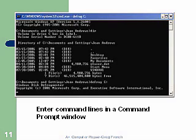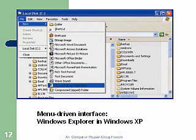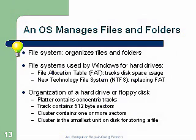There is a menu-driven interface using Windows Explorer in Windows XP. Explorer provides many different menus and ways of selecting applications. The OS manages files and folders. The file system organizes files and folders — the file system used by Windows for hard drives is the File Allocation Table (FAT). FAT tracks disk space usage. A newer technology is NTFS, the New Technology File System, which replaced FAT.